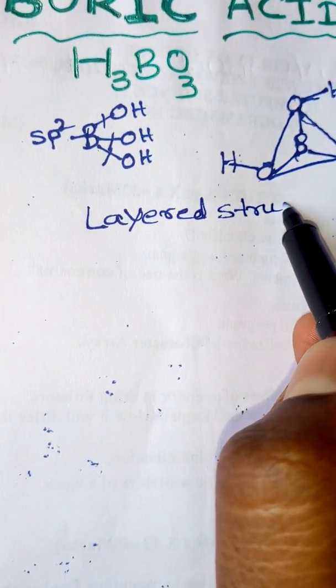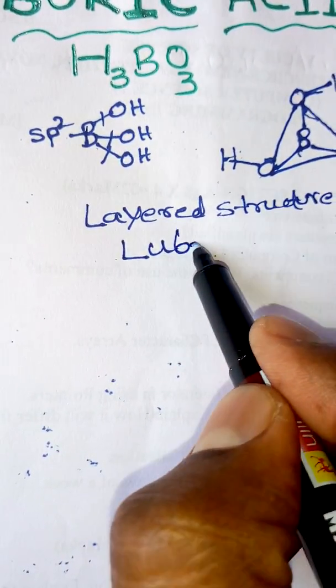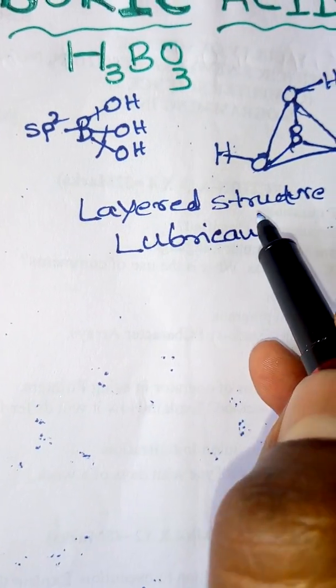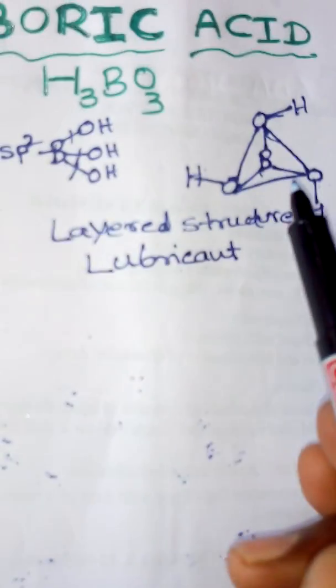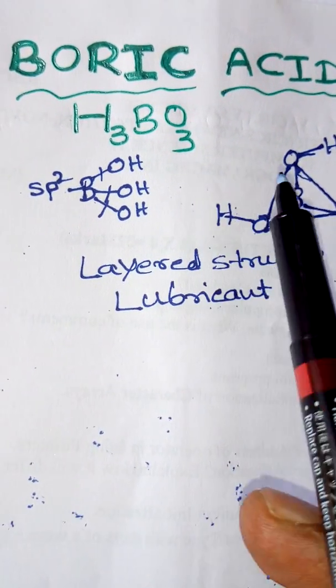All substances which have layered structures act as lubricants, so boric acid also acts as a lubricant. While playing caroms we use boric acid as the lubricant. In a similar way, graphite also has a layered structure like boric acid,